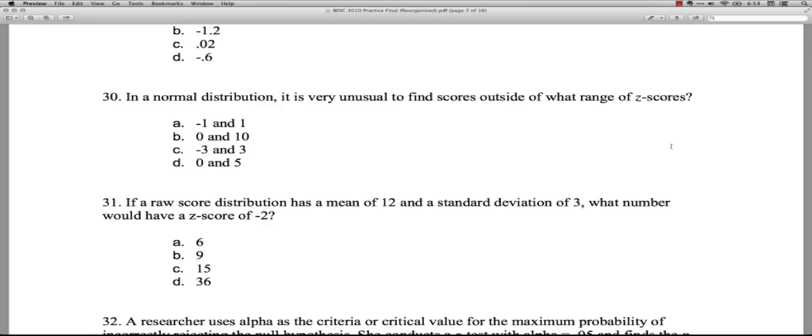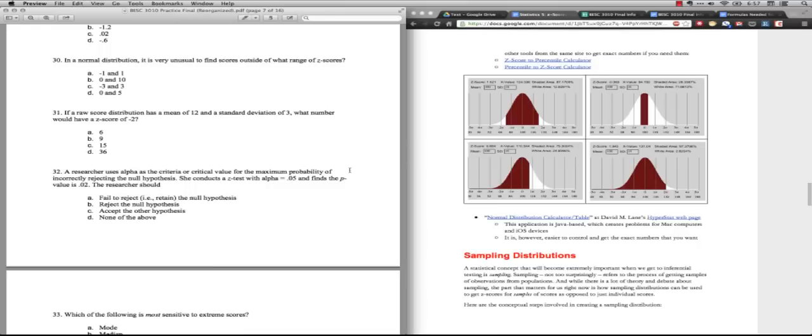Question 30. In a normal distribution, it is very unusual to find scores outside of what range of Z scores. This is kind of a tricky one. Let me pull up a picture of the standard distribution. Here's some small pictures of normal distributions that I've used earlier. Minus and positive one standard deviation, that's this part right here in the middle. And that's normal stuff, normal variation.